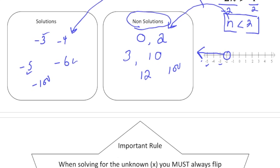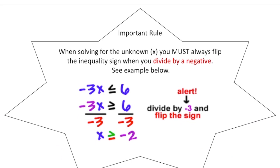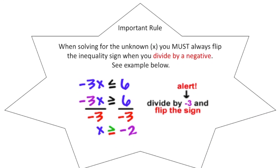If you turn the page, here's a nice summary of the golden rule. When solving for an unknown x, you must always flip the inequality sign when you divide by a negative. So here's the problem: we have negative 3x is less than or equal to 6. We divide both sides by negative 3, and because we're doing that, you have to flip the sign. The sign goes from less than or equal to, to greater than or equal to.